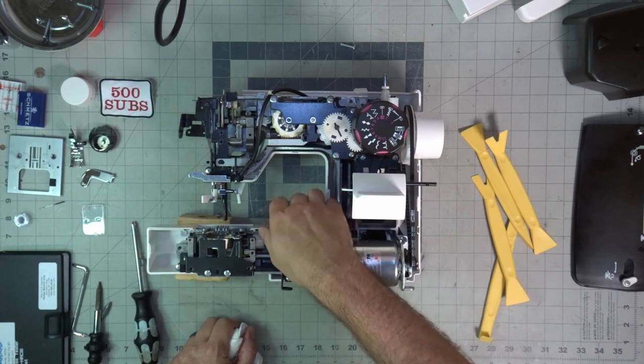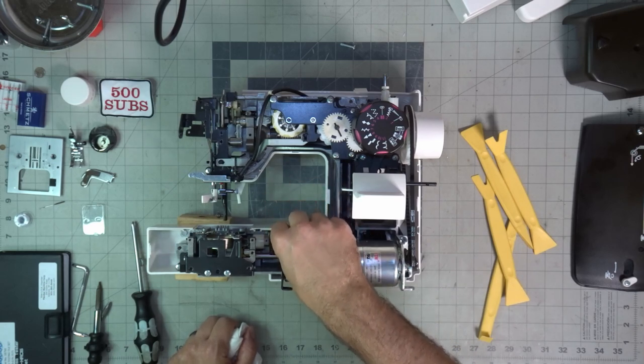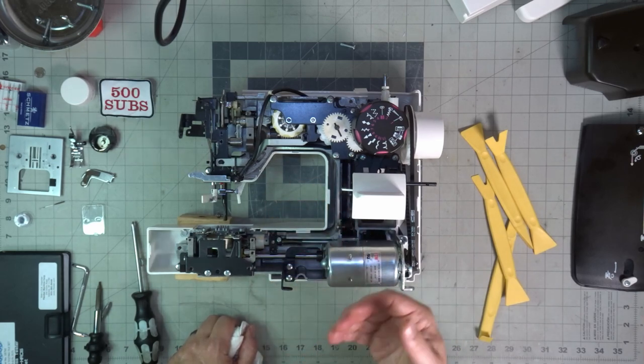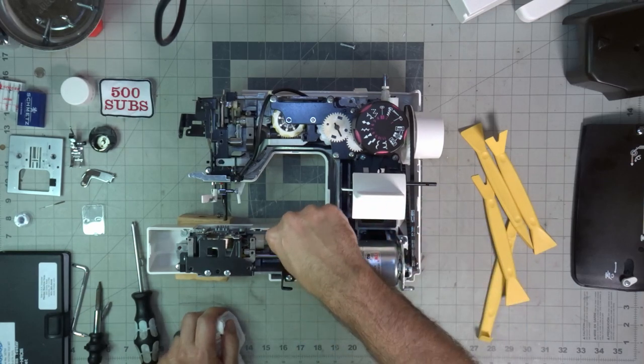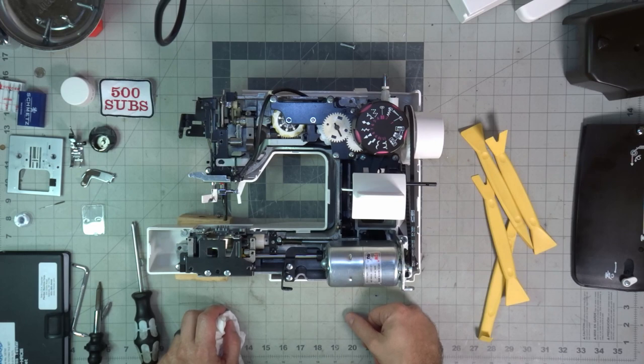We do have a nice frame. I'm going to call this ZAMAC. This is the pop metal, whatever you want to call it. It's the cheapest metal you can get, but it is metal, and it is sturdy, and it is a strong frame. So this is good that we have a strong frame in the sewing machine.